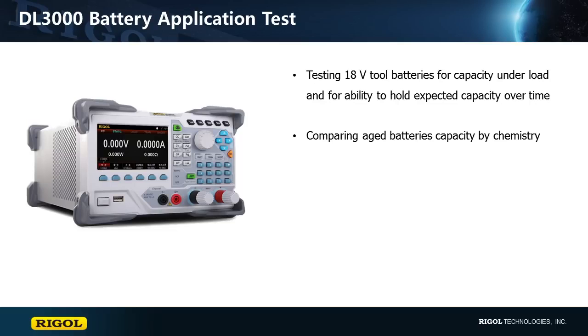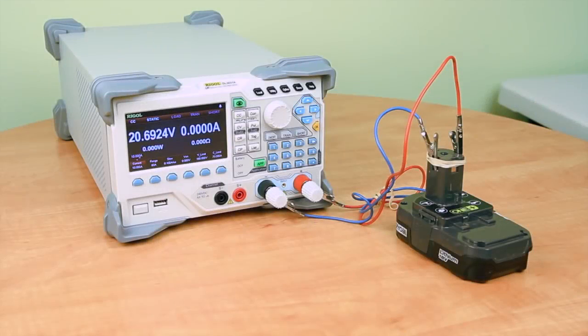We will analyze service life and capacity on a number of batteries and draw conclusions about each battery's capability and usefulness. Let's take a look at our test setup for one of our 18 volt lithium battery tests. Here we are with our DL3031A electronic load connected to an 18 volt lithium ion tool battery. Let's first take a look at how we're going to set up this battery test.